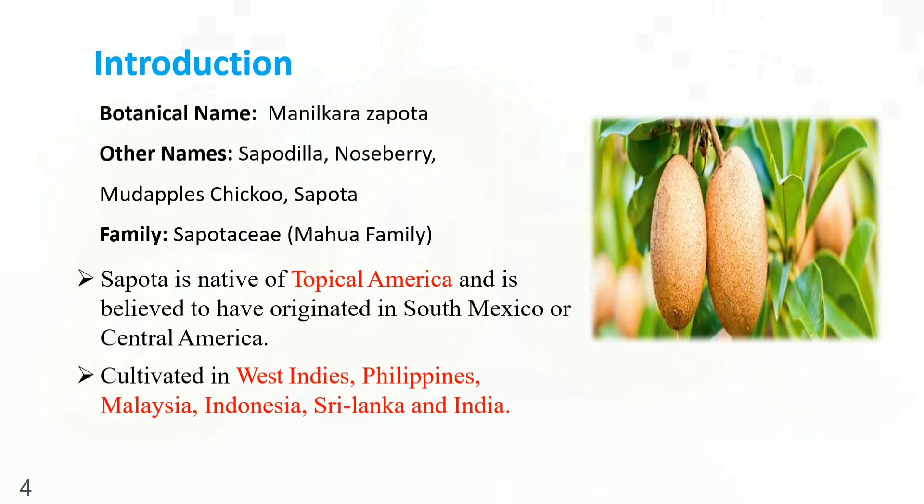Introduction. Botanical Name: Malankera Zapata. Other names include Seporilla, Noseberry, Muda Apples, Chikku, and Spotter. Family: Spotesty. Spotter is a native of Tropical America, believed to have originated in South Mexico or Central America. It is cultivated in West Indies, Philippines, Malaysia, Indonesia, Sri Lanka, and India.